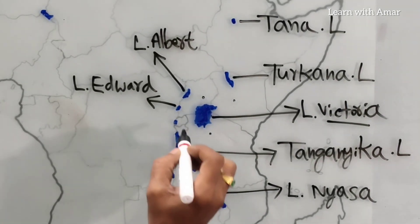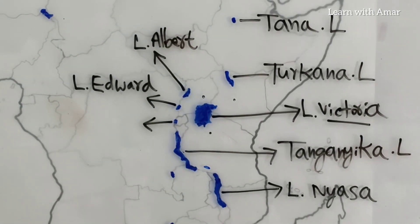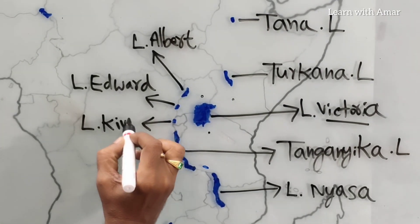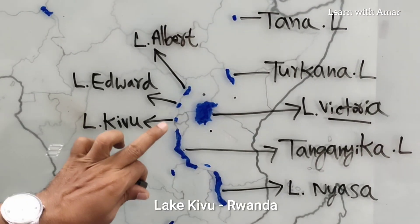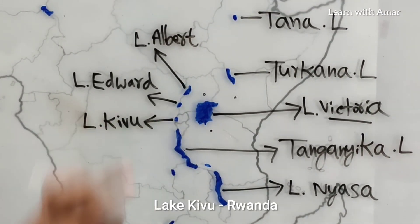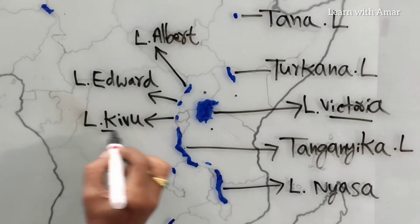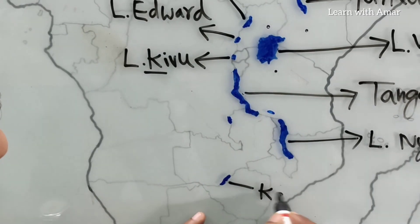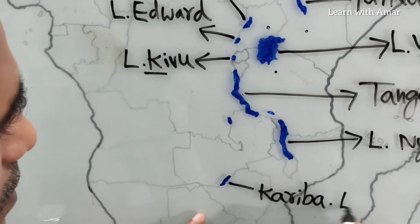Now, this lake is known as Lake Kivu. Lake Kivu is located in Rwanda. This one starts with K — it is Lake Kariba.